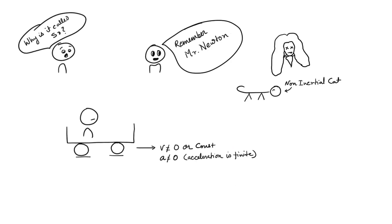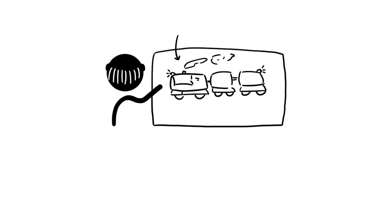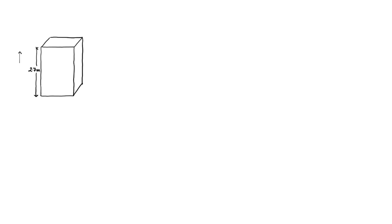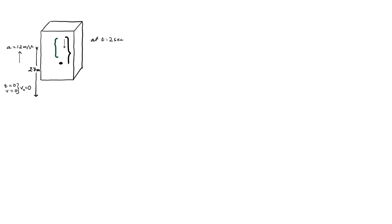Now in the second part of the video we are going to look at a problem related to a non-inertial frame of reference. In the last video I was explaining the inertial frame of reference and how to solve problems related to that. Pay very close attention because it's going to be complicated. In this example we have an elevator car with a height of 2.7 meters from ceiling to floor, accelerating at 1.2 meters per second squared upward, starting with an initial velocity of 0 meters per second. Two seconds after that, a bolt starts falling from the ceiling of the elevator car.